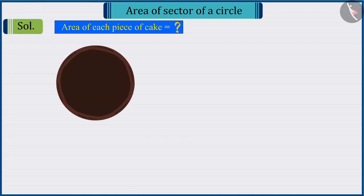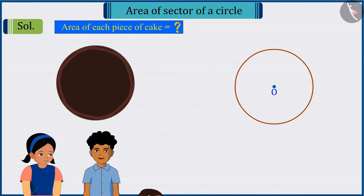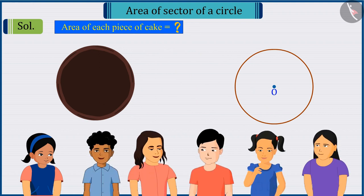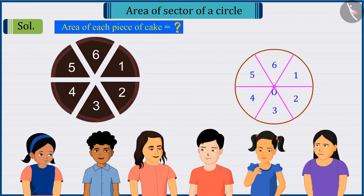Since, according to the question, the cake has to be divided among 6 friends, so we can say that there will be total 6 parts of the cake, i.e., 6 sectors will be formed, which we can demonstrate like this.